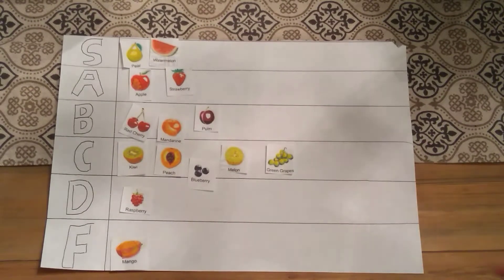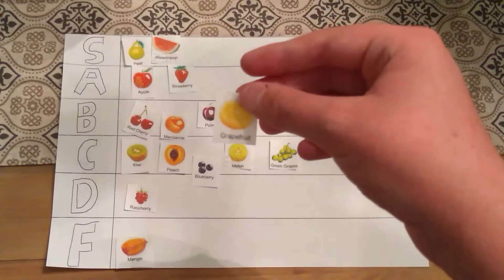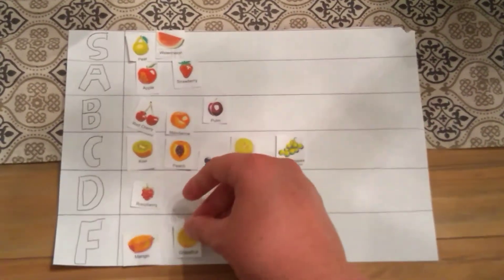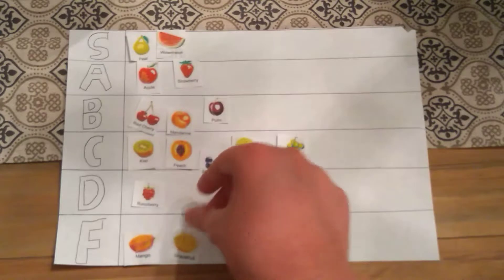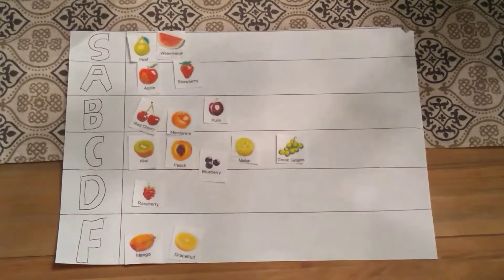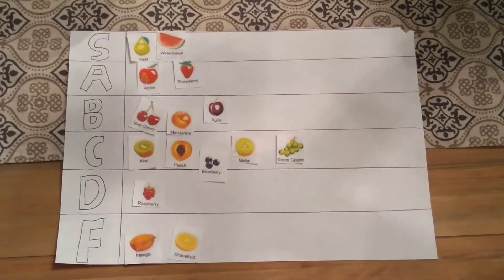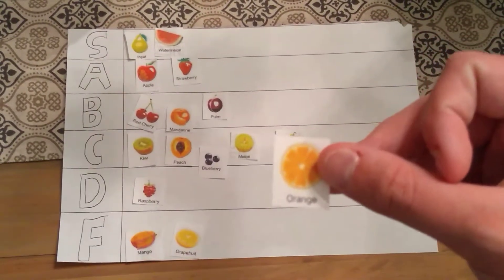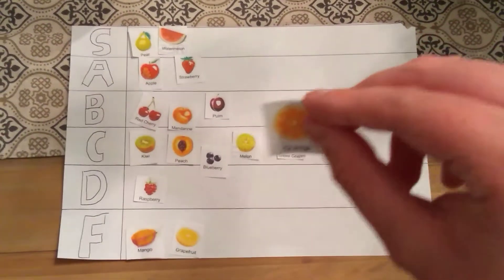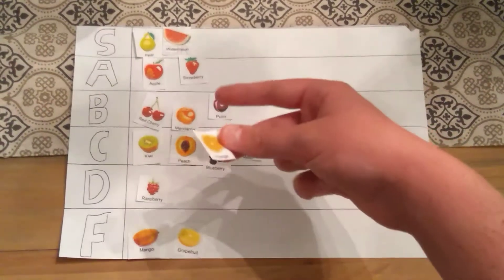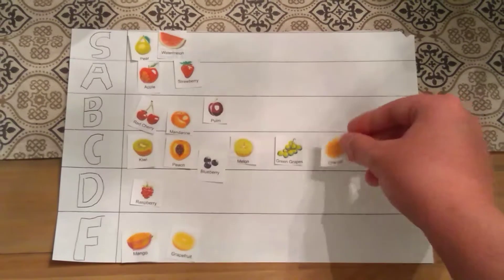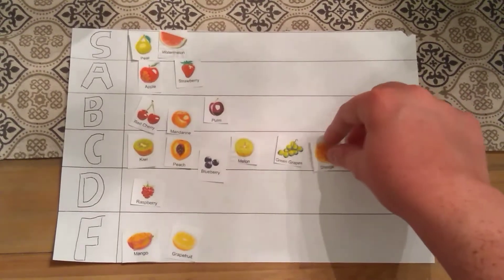And then we have grapefruit. Which are garbage. I don't like them. They're really, really bitter, I think, from when I tried them. They're terrible. Next up, we have orange. Oranges are like mandarins, but bigger. And since I can't eat an entire orange, they'll be going in the C tier.